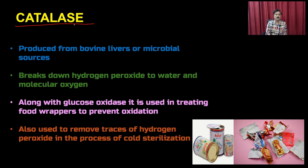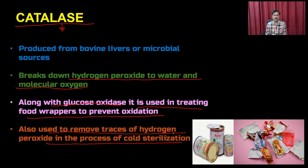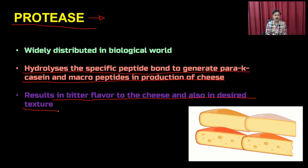Catalase is used for breaking down hydrogen peroxide into water and molecular oxygen. Along with glucose oxidase, it is used in treating food wrappers to prevent oxidation and to remove traces of hydrogen peroxide in cold sterilization. Proteases hydrolyze specific peptide bonds to generate para-casein and macropeptide in cheese production, resulting in bitter flavor and desirable textures.